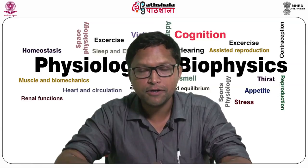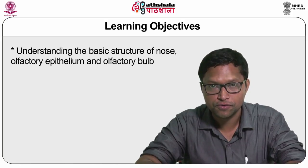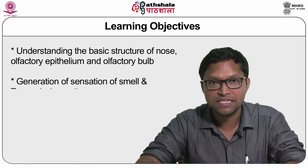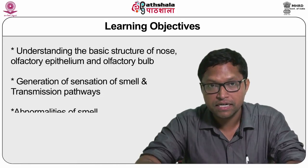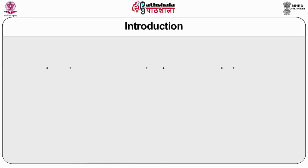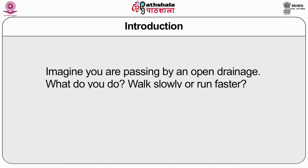The main objectives for the smell section are: understanding the basic structure of the nose, olfactory epithelium, and olfactory bulb; generation of the sensation of smell and transmission pathways; abnormalities of smell; and finally the summary.